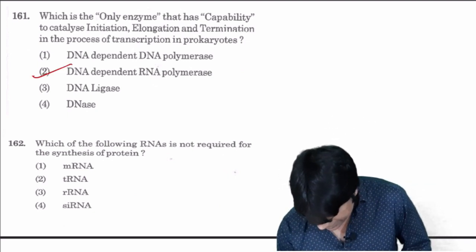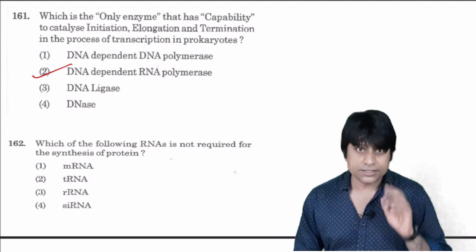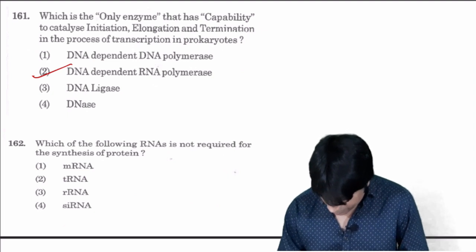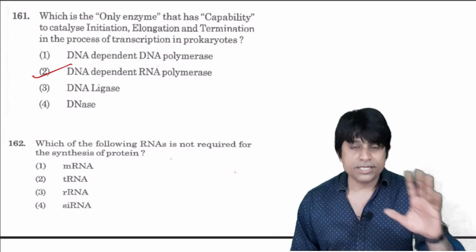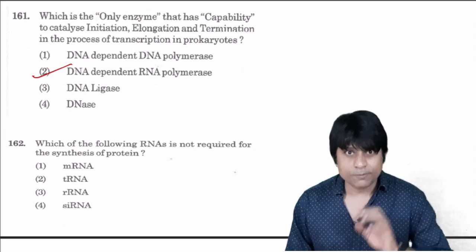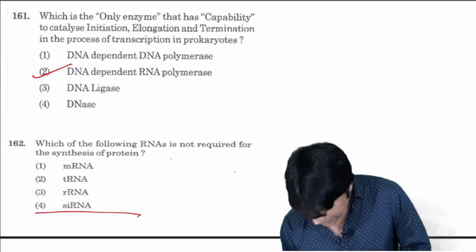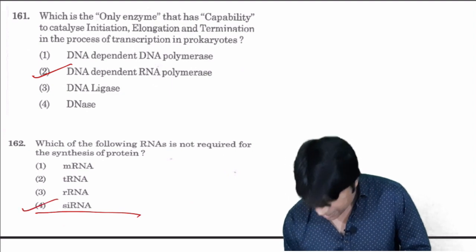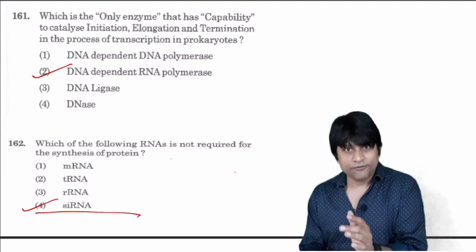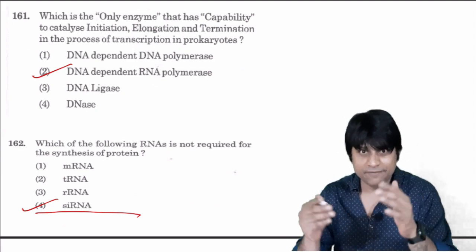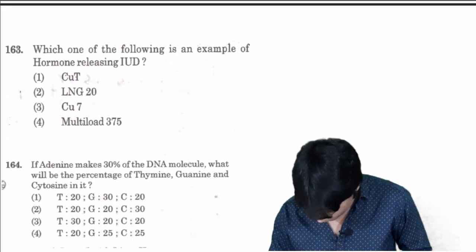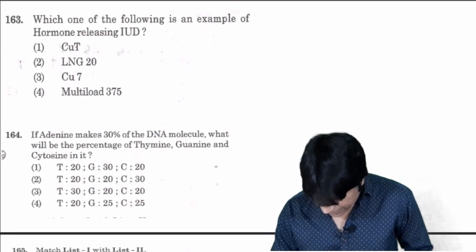Which of the following RNA is not required for synthesis of protein in protein synthesis? mRNA has a role, tRNA has a role, ribosomal RNA has a role, whereas short interfering RNA does not have any role in protein synthesis. This is responsible for cleaving the RNA. Answer is four.